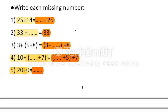Now let's write each missing number. We have a left side and a right side, and we need to find the missing number on the right side to make both sides equal. Exercise 1: 25 plus 14 equals what plus 25. Using the commutative property, we change the order, so 25 plus 14 equals 14 plus 25. The missing number is 14.